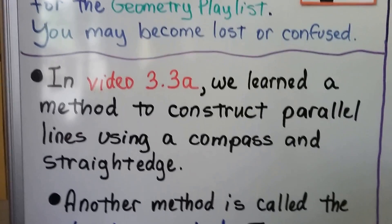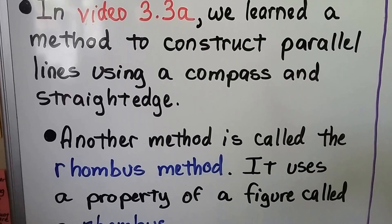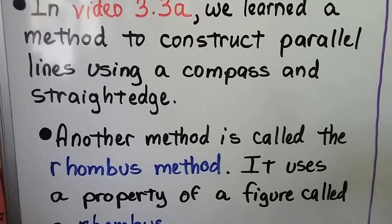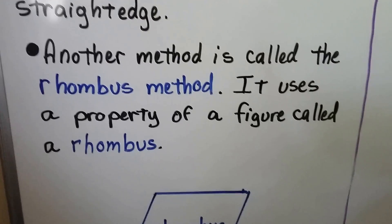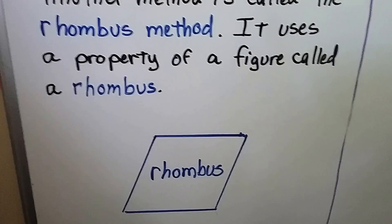In video 3.3a, we learned a method to construct parallel lines using a compass and a straight edge. Another method is called the rhombus method, and it uses a property of a figure called a rhombus.